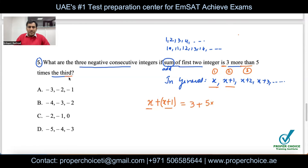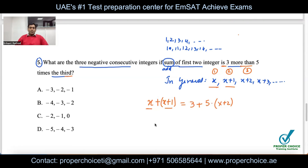So the equation becomes: 2x + 1 = 13 + 5x. Now let's solve for x by combining like terms — take all x-related terms to one side and constants to the other.